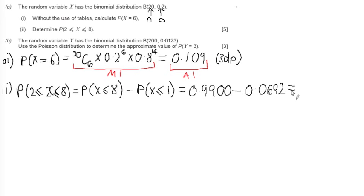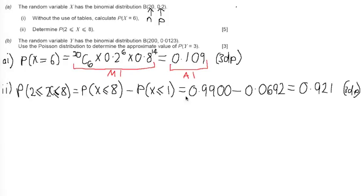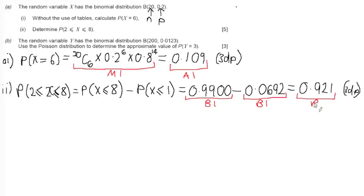This gives us a final answer of 0.921 to 3 decimal places. So let's have a look at how we get our marks on this question. We get statement marks for each of the correct probabilities: B1 for probability X less than or equal to 8, B1 for probability X less than or equal to 1, and then a statement mark for the final correct probability. You only get marks if these have been stated somewhere along the way.